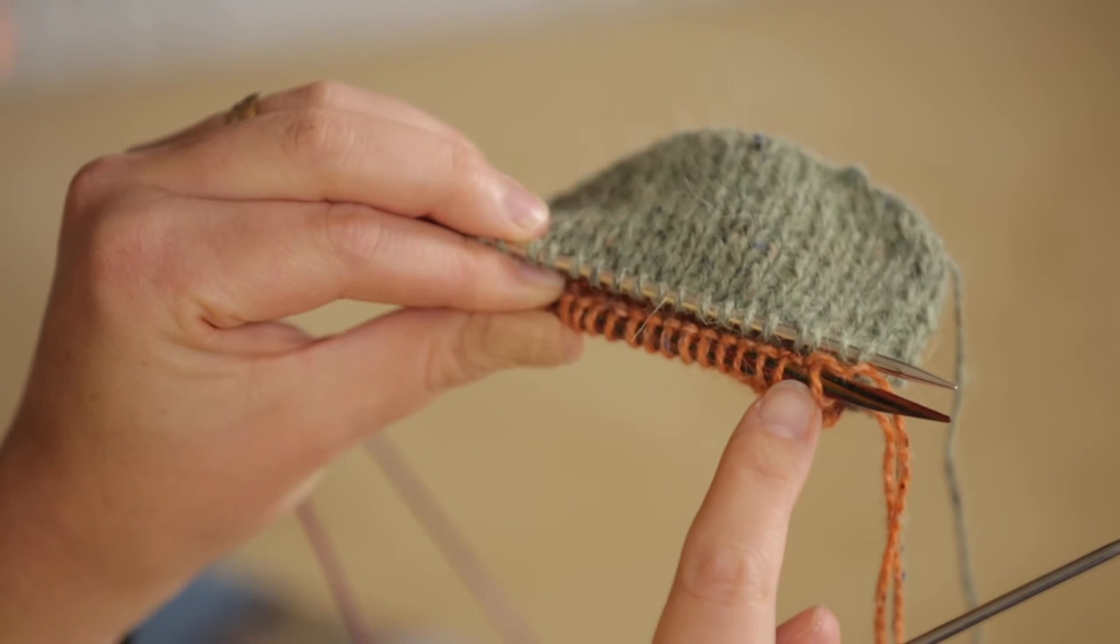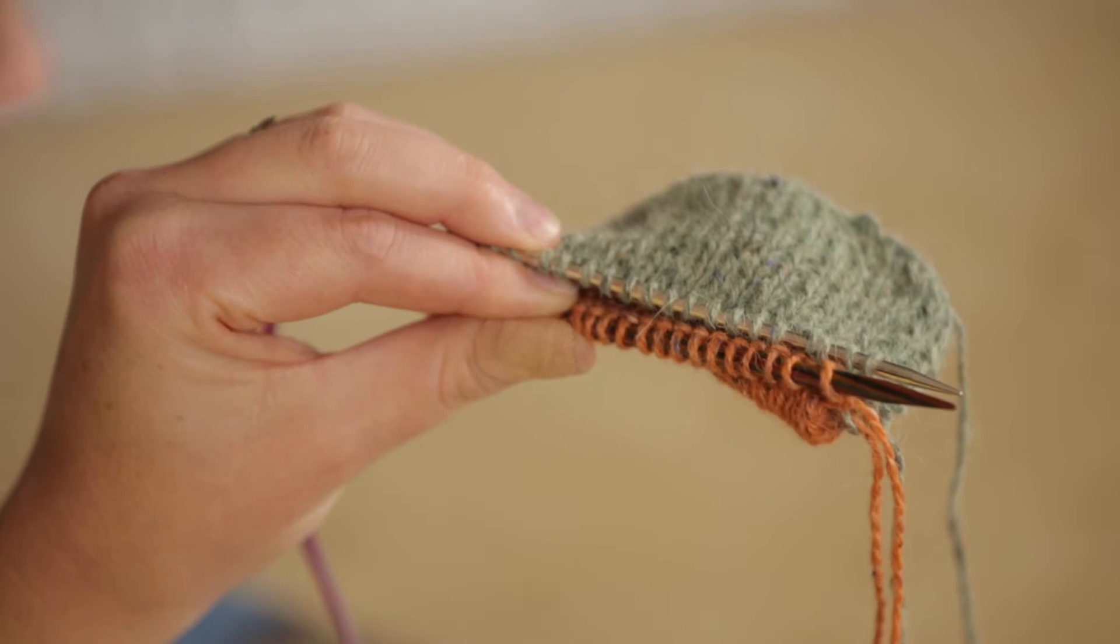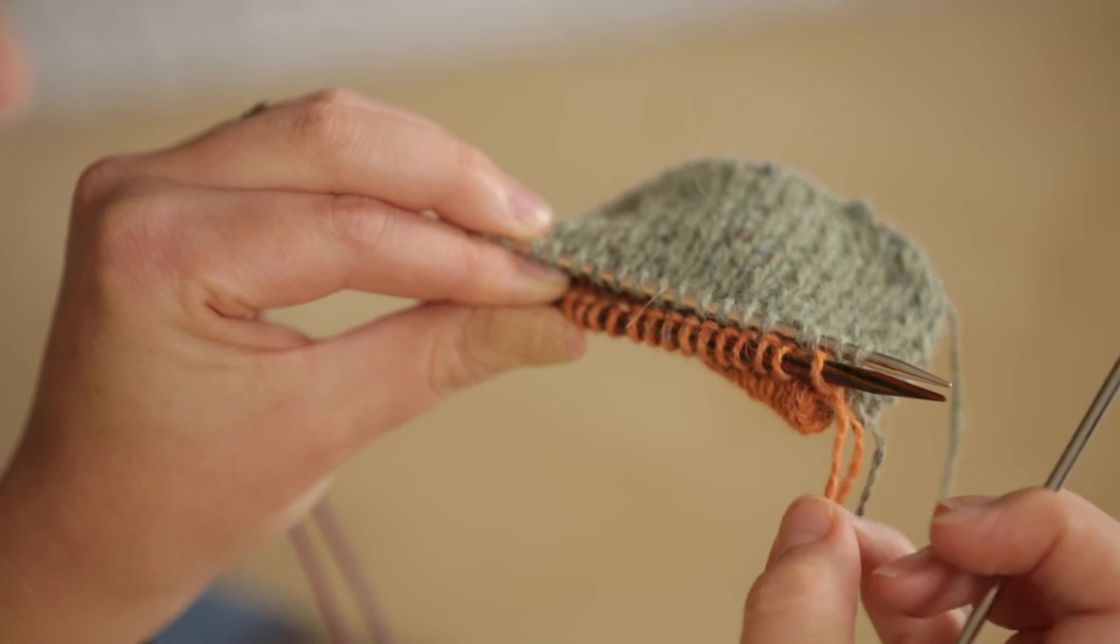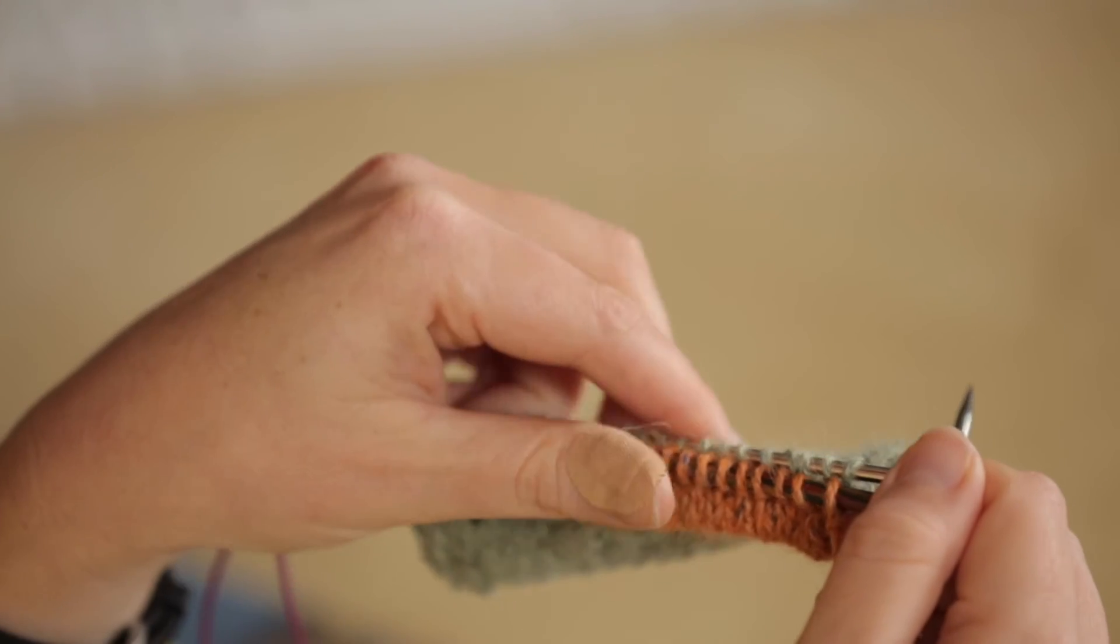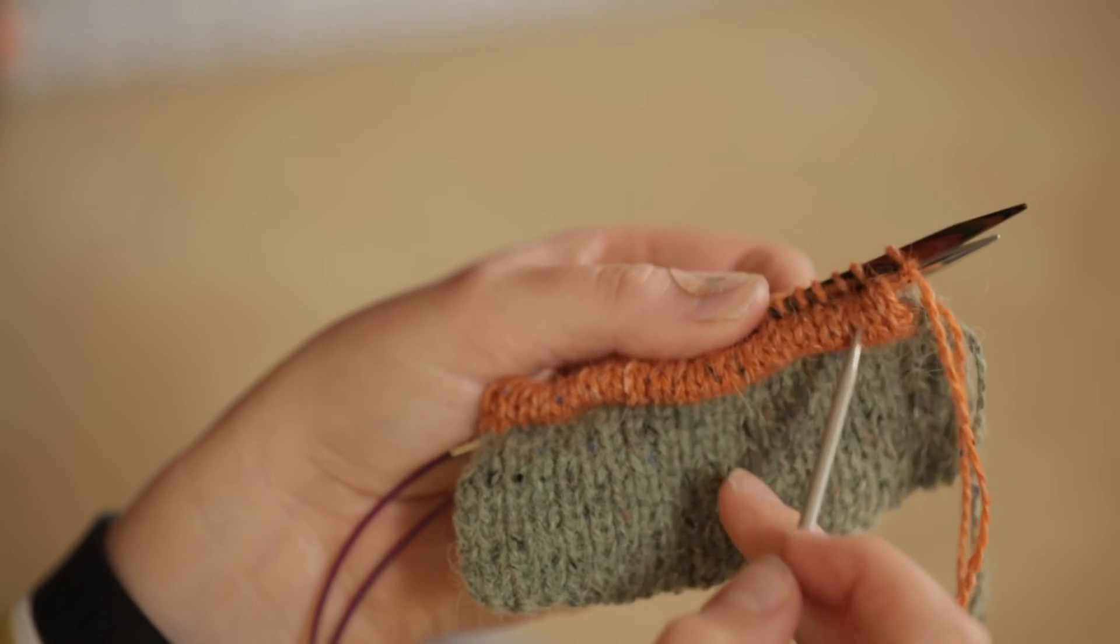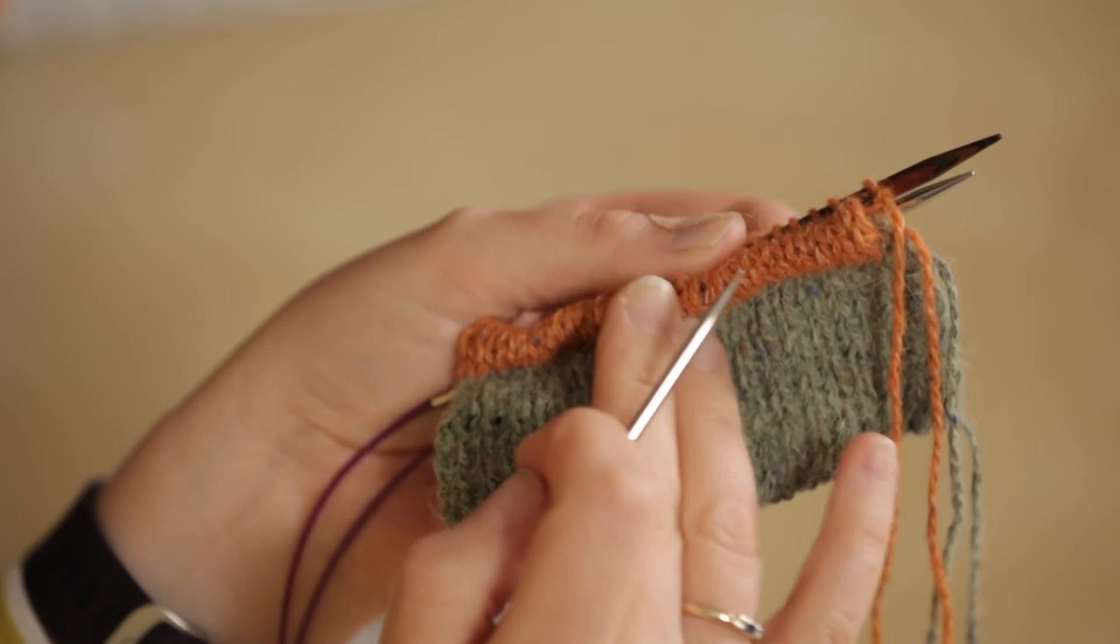We're going to work the joining row onto the other end of the smaller needles that we were using before. We're going to fold the tuck fabric so that the right side is on the outside, so you can see the smooth stocking stitch on the outside of the tuck.